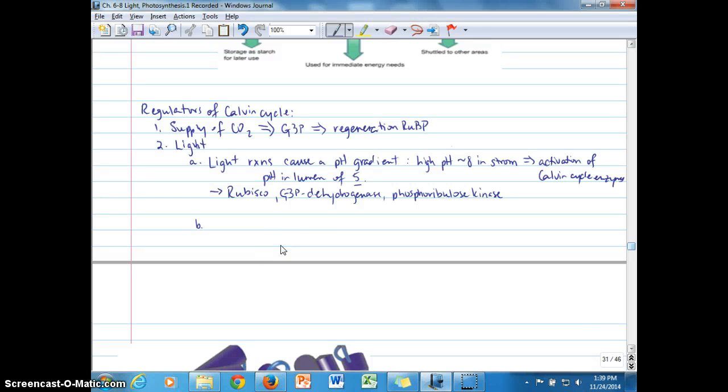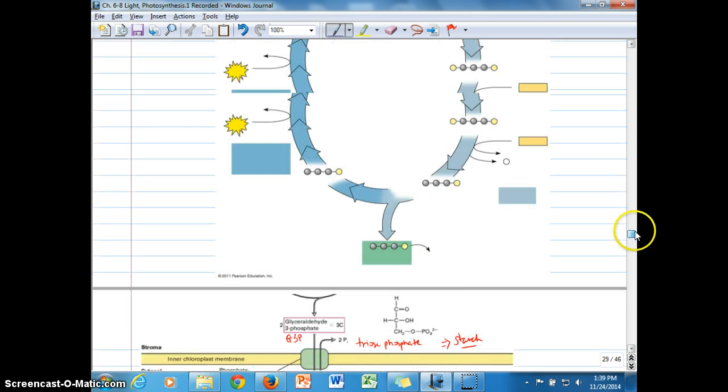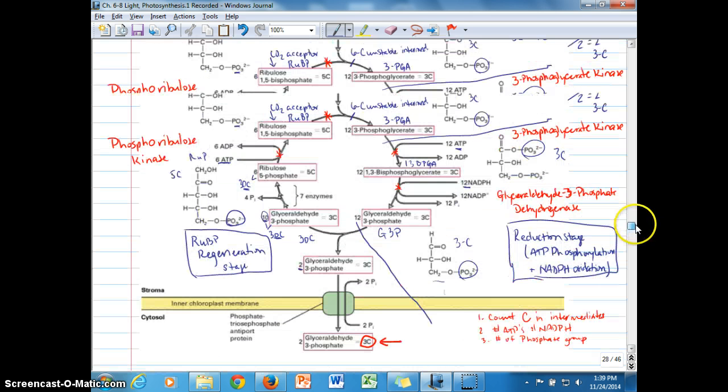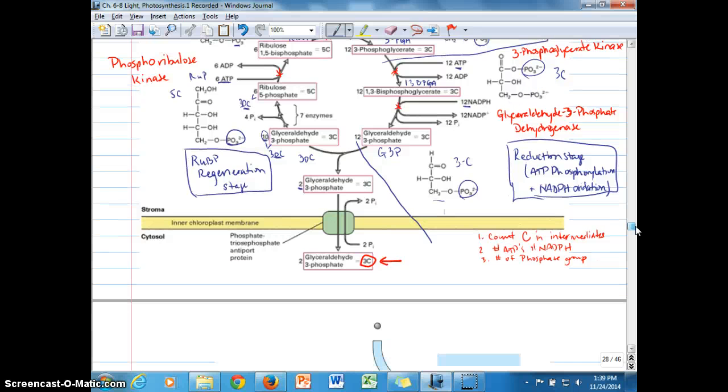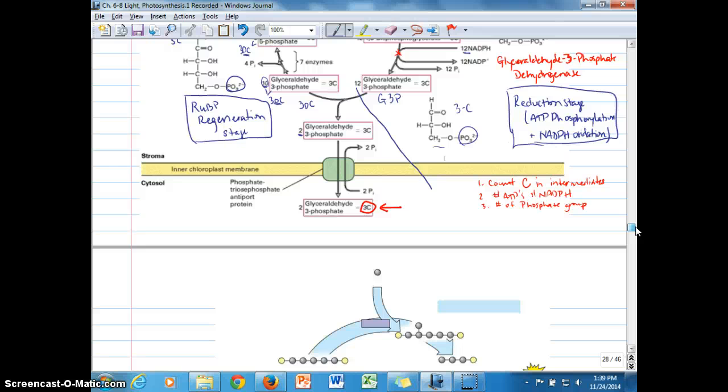All right, so up until now we've been talking about photosynthesis, light reactions, the Calvin cycle. In the last recorded lecture we were examining the intermediates of the Calvin cycle, the enzymes that catalyze different steps in the Calvin cycle.